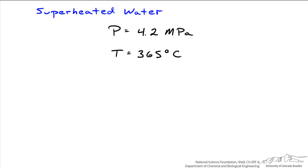Let's say we're dealing with superheated water and we want to figure out at a pressure of 4.2 MPa and a temperature of 365 degrees C, we want to use these two intensive variables to come up with the specific volume at these conditions.